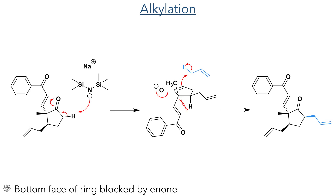With this now complete, the researchers then turned their attention to functionalizing the other alpha position of the ketone. This was first deprotonated using sodium HMDS and the enolate was then reacted with allyl iodide. This occurred from the top face of the ring as the more sterically demanding phenyl enone blocks the bottom face.